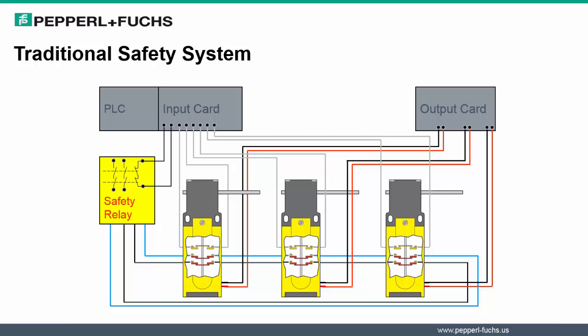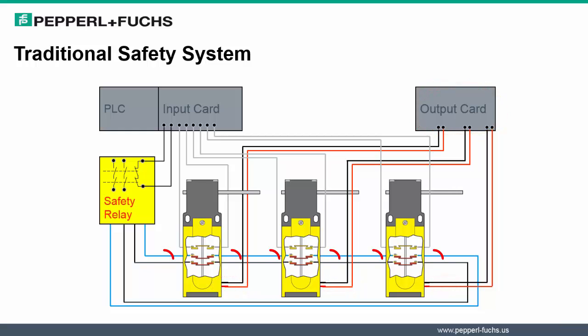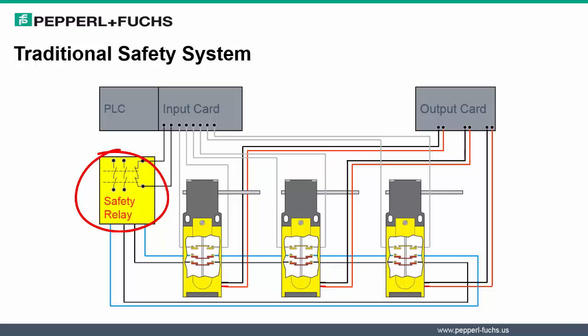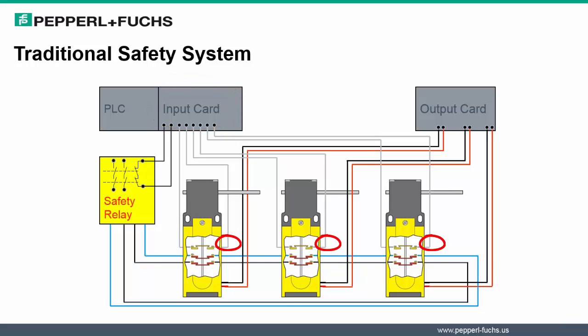Now let's look at a typical arrangement of a traditional safety system. First, solenoid locking inputs had to be routed to output cards of the PLC. Secondly, the redundant safety contacts were daisy-chained to each other and connected to an external safety relay, which connected to a PLC input card. Finally, auxiliary contacts had to be routed to input cards of the PLC. After putting such a system together, it became evident very quickly that numerous manual connections were needed. Long conduit and cable runs had to be made, and complex wiring was unavoidable.